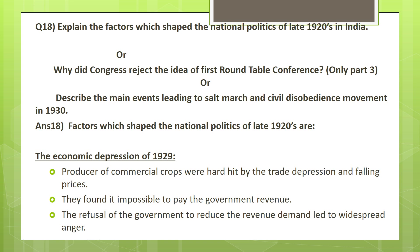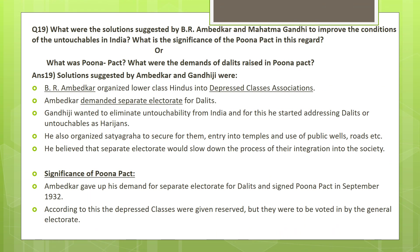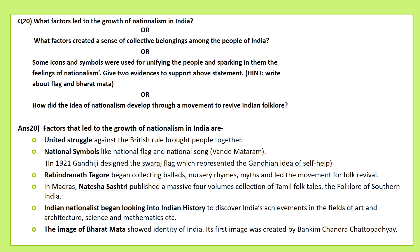This question is less important. But this one — why did Congress reject the idea of the first Round Table Conference — can be asked, though it's also less important. Now this is on Puna Pact: what was the significance and what were the solutions suggested by Ambedkar and Gandhiji? Puna Pact is important. This is an extremely important question, often repeated, and you must go through it.